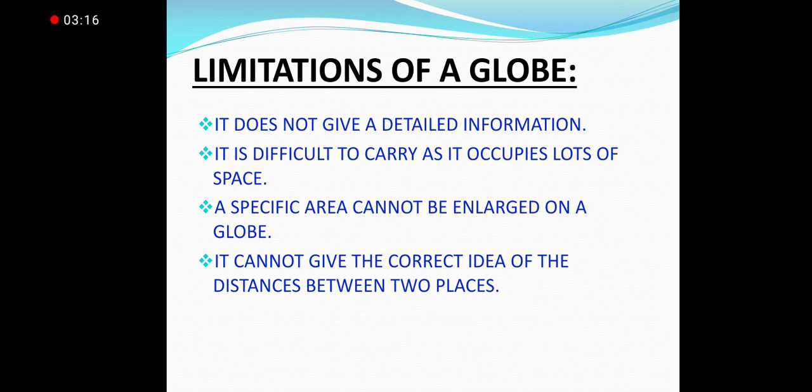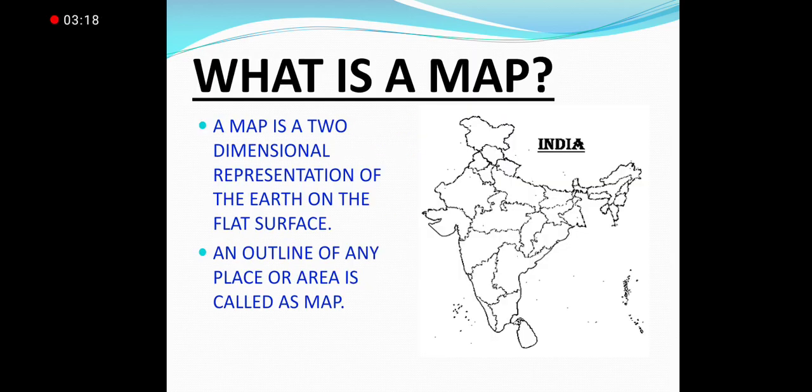Moving forward, we have maps. Let us see what is a map. A map is a two dimensional representation of the earth on the flat surface. Or, we can also say it is an outline of any place or area.